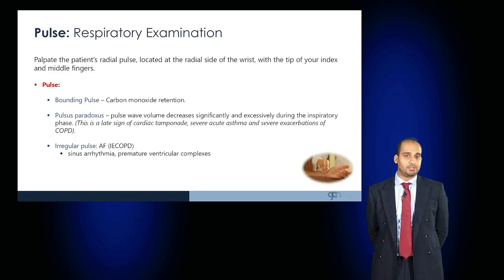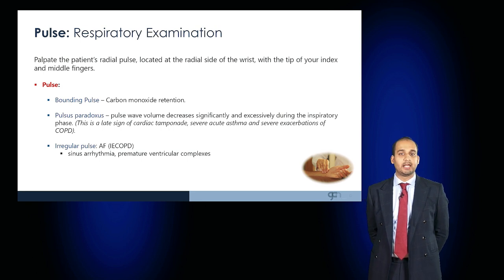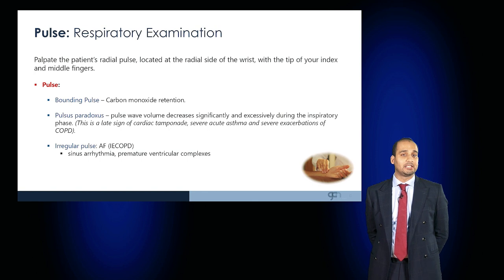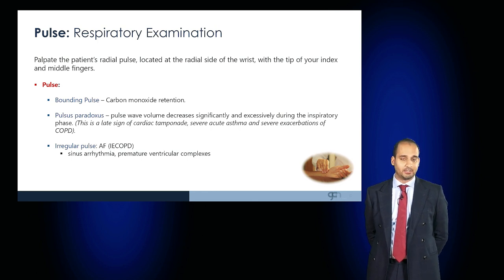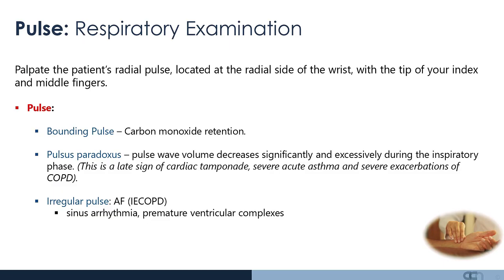Now move on to examine the patient's radial pulse, located at the radial side of the wrist, palpated with the tip of your index and middle fingers. Determine the quality — a bounding pulse may be associated with carbon dioxide retention. Pulsus paradoxus, where the pulse waveform decreases significantly during the inspiratory phase, can be seen in severe asthma, severe COPD, or cardiac tamponade. An irregular pulse such as atrial fibrillation may occur as a result of an infective exacerbation of COPD.